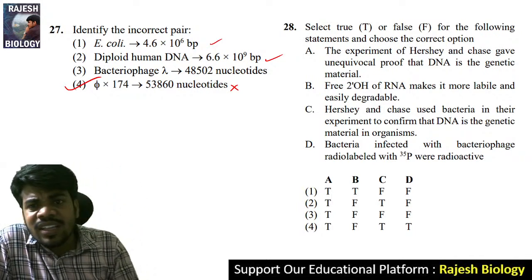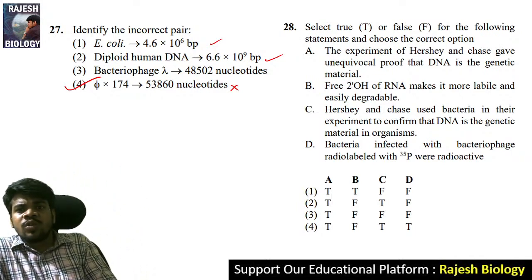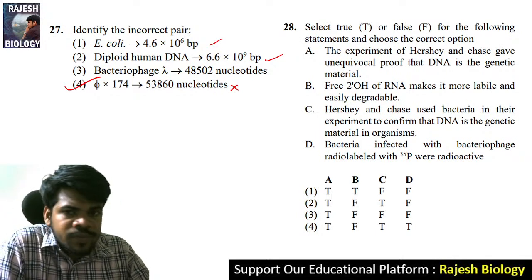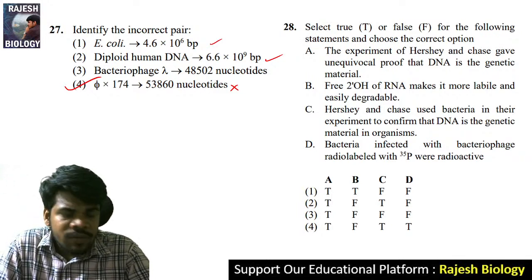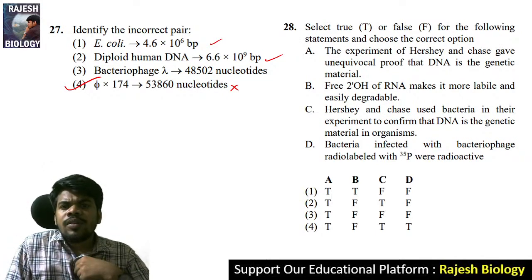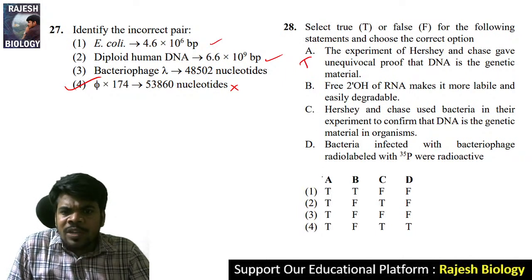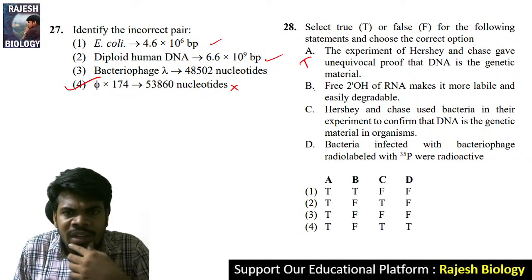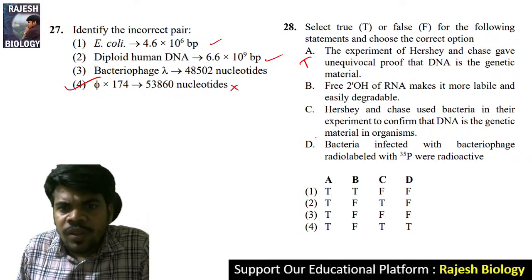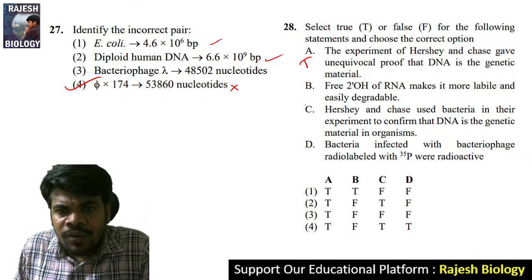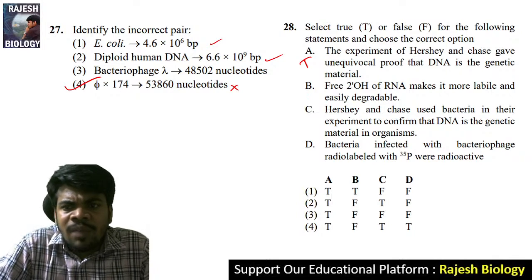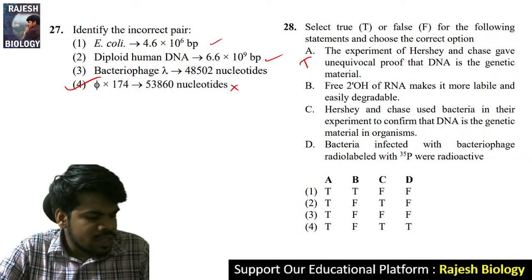Question 28: select true or false for the following statements and choose the correct option. The first statement is definitely true — no need to read all options. The second statement: 2'-OH of RNA makes it more labile and easily degradable — is this right? The right answer is option one.